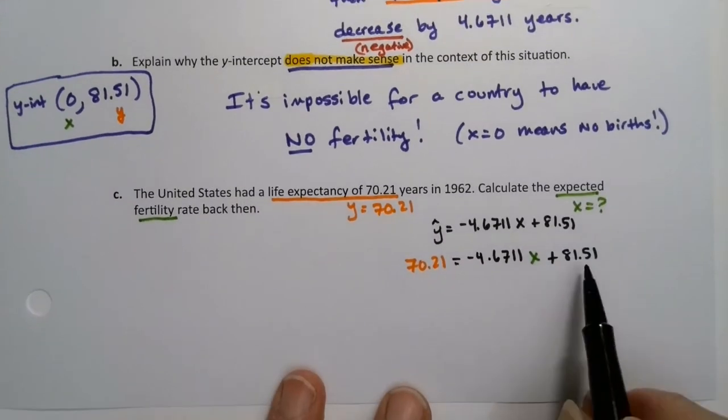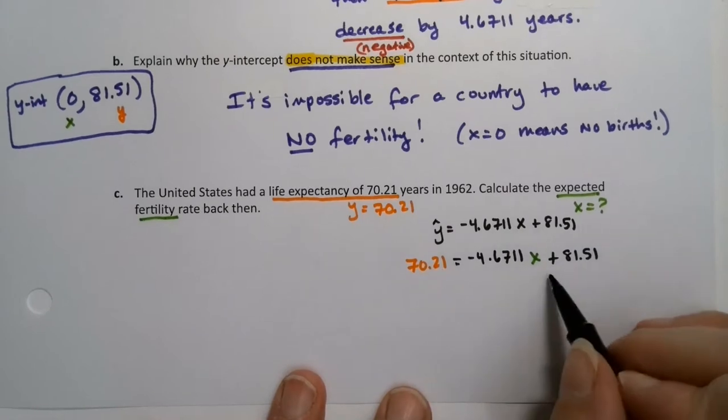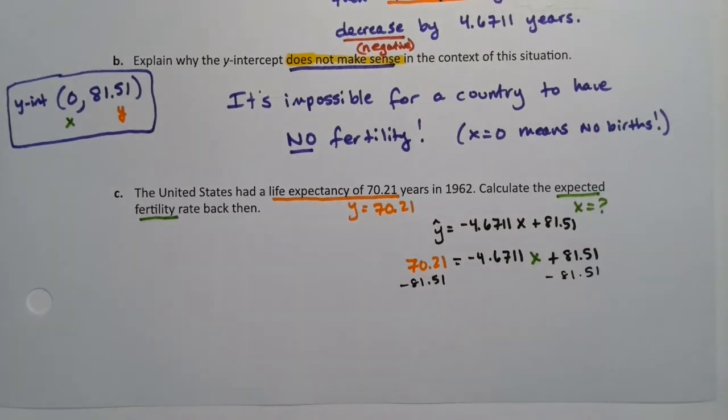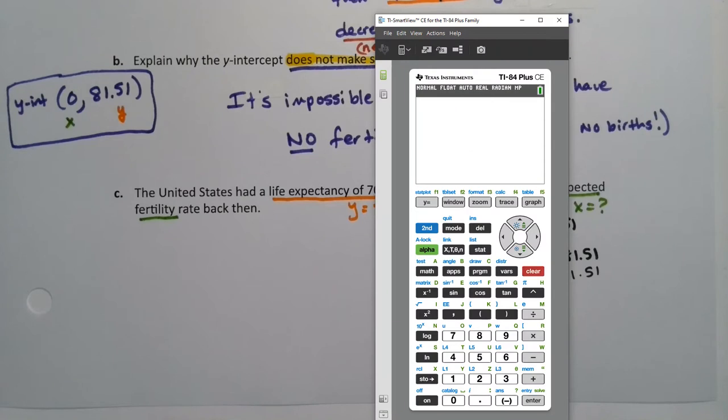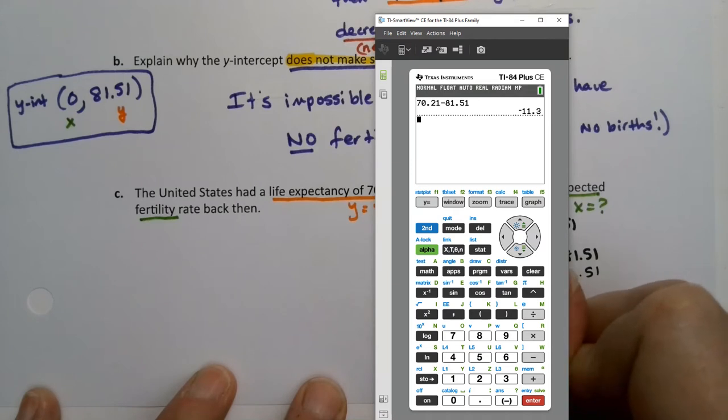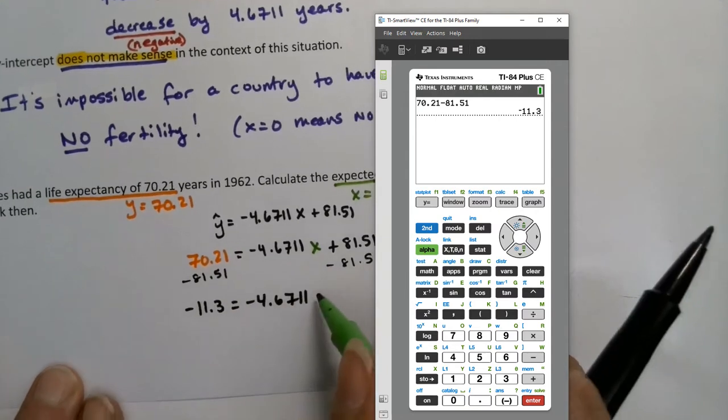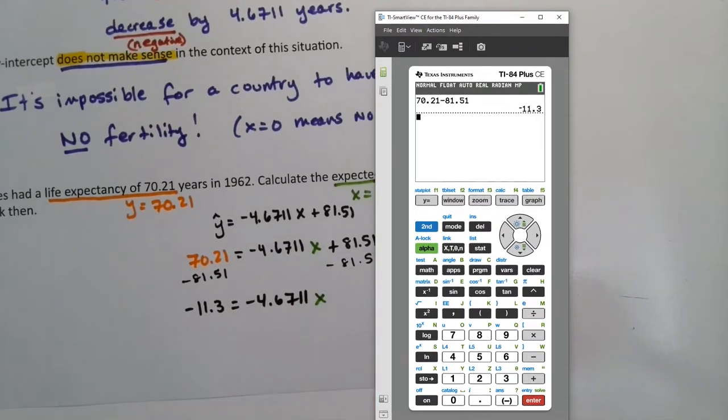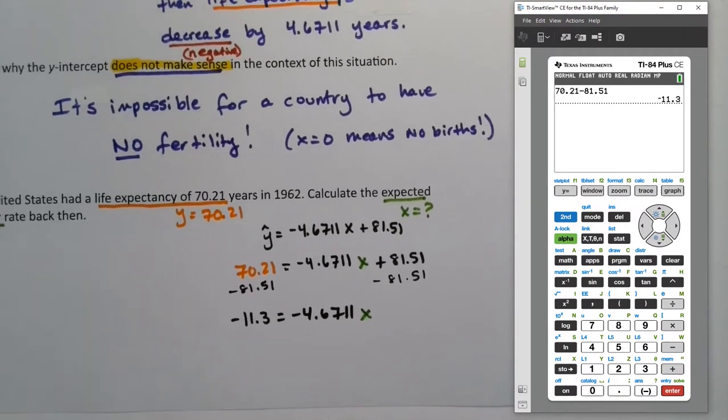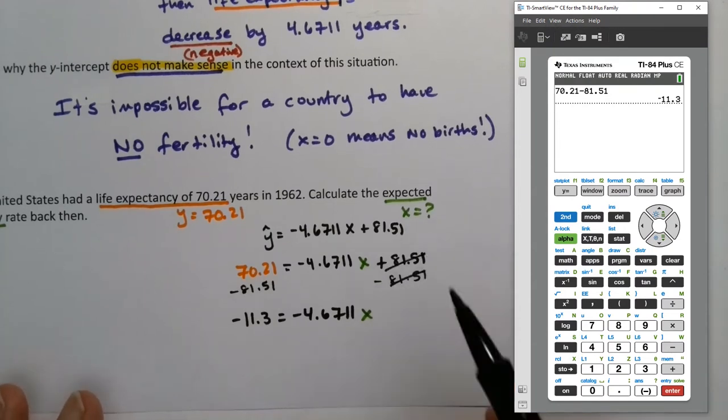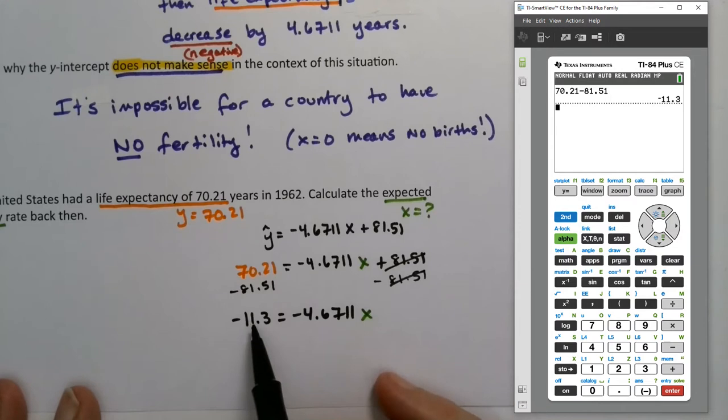So, the first thing you want to do is subtract 81.51 from both sides. Get that out of there and get it to the other side. So, minus 81.51, minus 81.51. Let me grab a calculator. If you don't have a graphing calculator, you can grab Desmos. That'll work. So, 70.21, take away 81.51, it gives you a negative 11.3. And I did that because that was added, and the opposite of adding is subtraction. So, that means these two disappear, and then I'm left with negative 11.3.